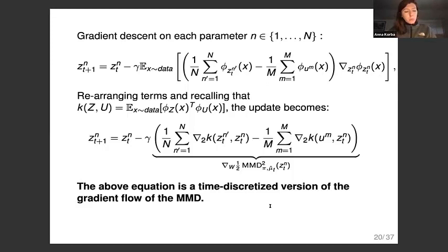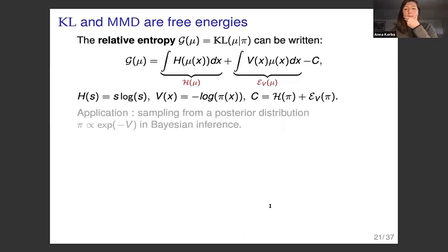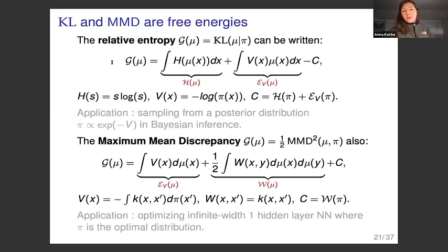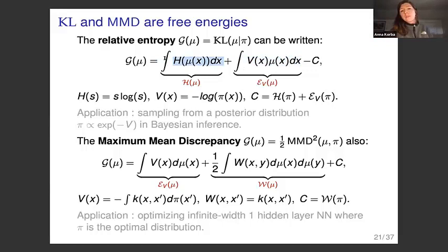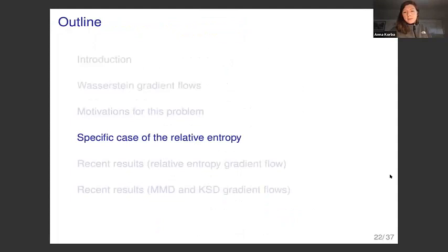I've given two examples in machine learning where you optimize a functional — either the KL divergence or the MMD — and different schemes arise from different discretizations. Both the KL divergence and the MMD are specific cases of free energies: the KL divergence writes as a potential energy plus internal energy (negative entropy), while the MMD writes as a sum of potential energy and interaction energy.